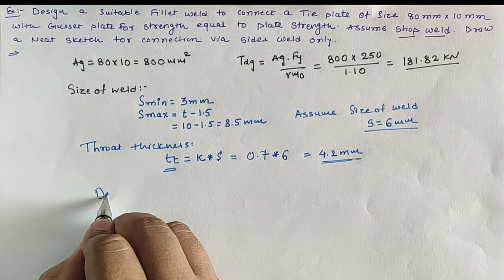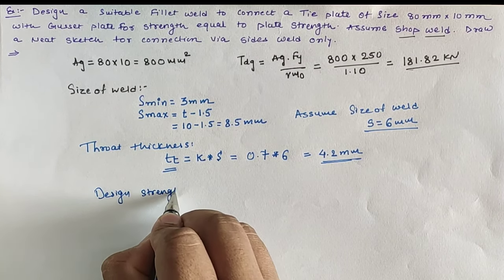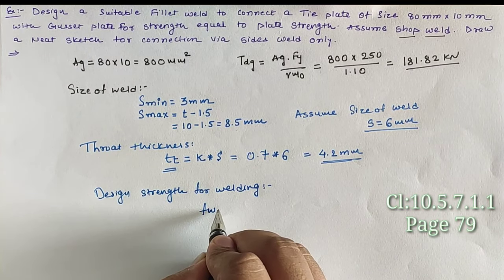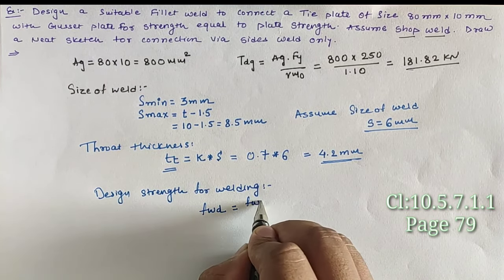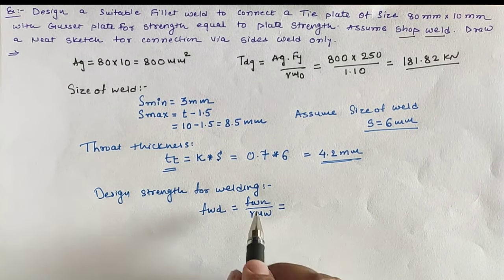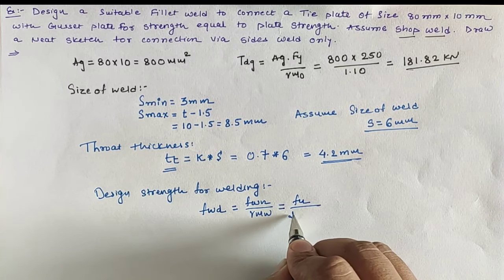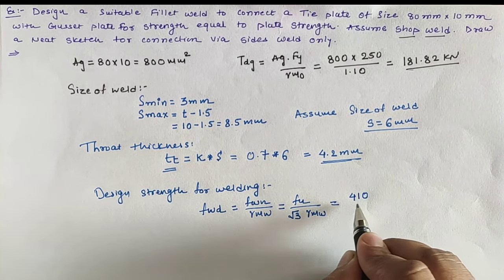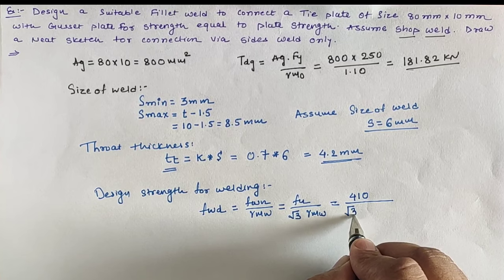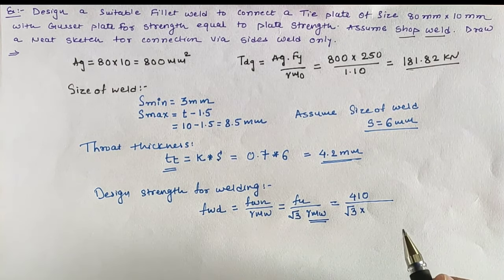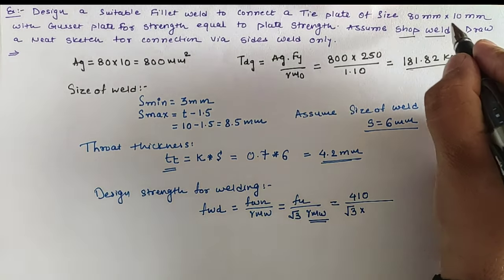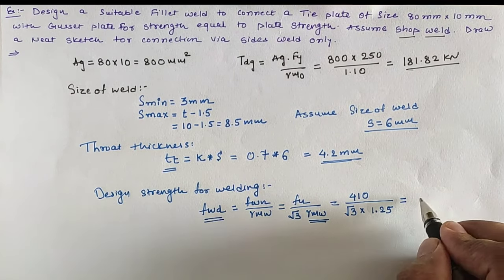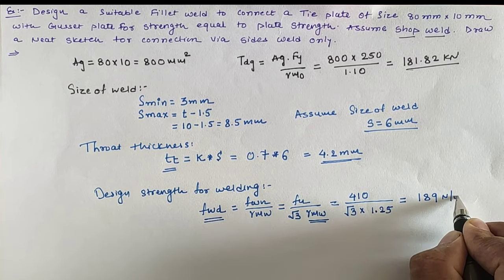According to the shop weld, our design strength for welding can be calculated by the equation: fwd equals fwn divided by γmw, where fwn is given as fu divided by root 3, and γmw is in the denominator. Here fu is the ultimate strength of the weld, equal to 410 N/mm², root 3 is a constant, and γmw from page number 30, table number 5 for the shop weld is 1.25. So our design strength is 189 N/mm².